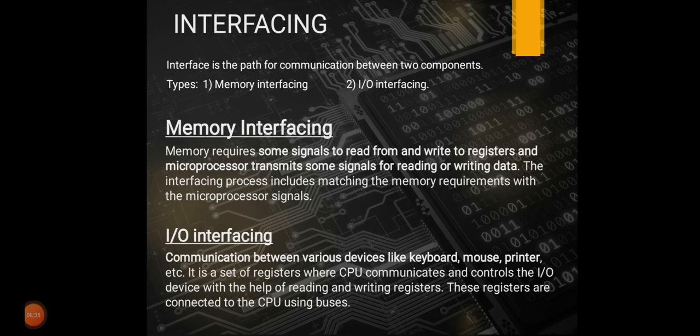The next topic is interfacing. Interfacing is the path for communication between two components — a way of communication between two devices. There are two types: memory interfacing and input/output interfacing. In memory interfacing, memory requires signals to read from and write to registers. The microprocessor transmits signals for reading or writing data. It is the process of matching memory requirements with the microprocessor signals.